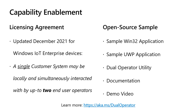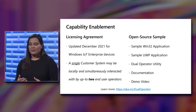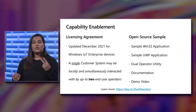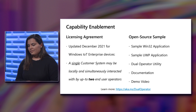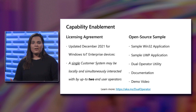Let's talk about the enablement and how you can get started with using dual operator. We have a licensing agreement that allows you to have two users simultaneously using a device. Traditionally, Windows Client is a one-user, one-device model, and we are shifting that for only fixed-purpose devices that run Windows IoT Enterprise. We updated our licensing language as of December 2021 to support this capability — a single customer may be locally and simultaneously interacted with by up to two end user operators. To assist with enablement, as there is no inbox code but instead we're leveraging everything already built into the OS, we have an open source sample for you to review.